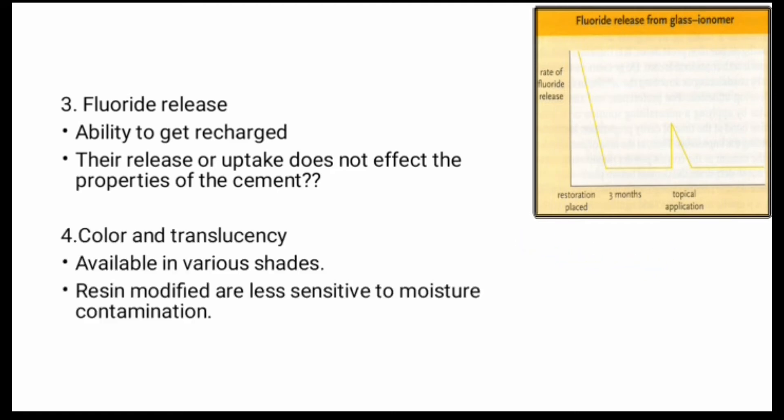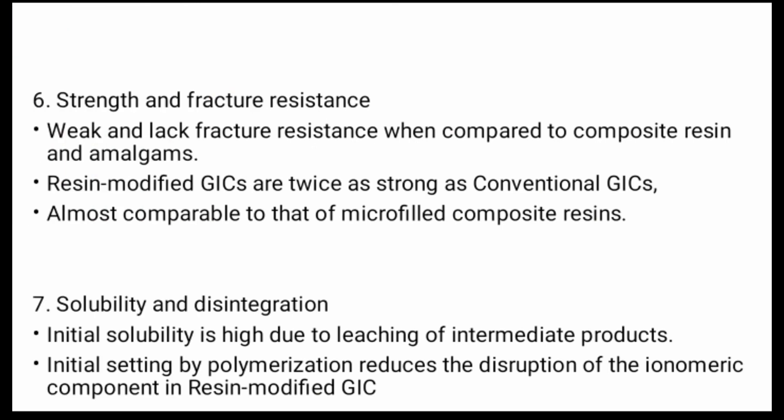Regarding color and translucency, GIC is available in various shades. Resin-modified versions are less sensitive to moisture contamination. Radio-opacity is another important property of glass ionomer cement.